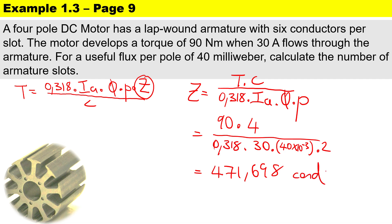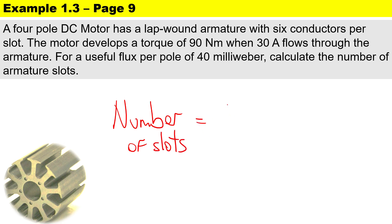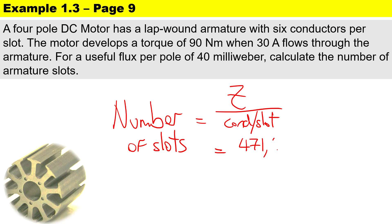Now we need to solve for the number of slots. The number of slots equals z (the total number of armature conductors) divided by the number of conductors per slot. Z is 471.698, and there are six conductors per slot, so the number of slots equals 78.616.